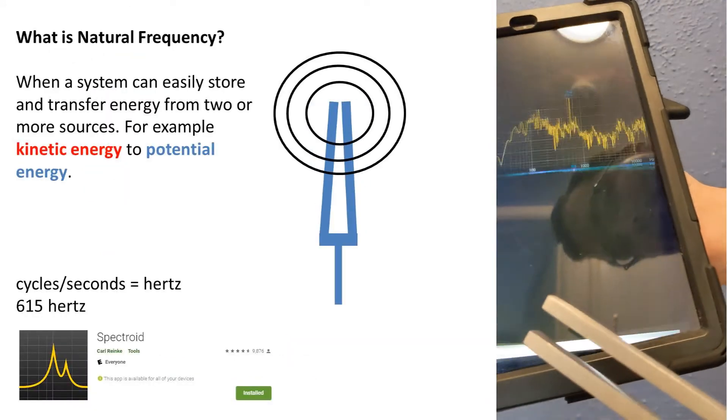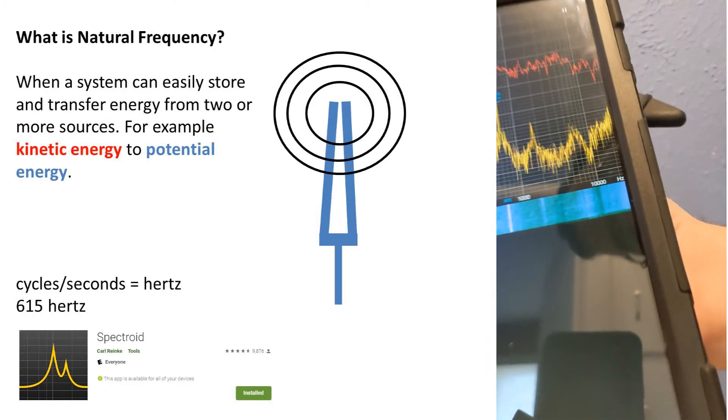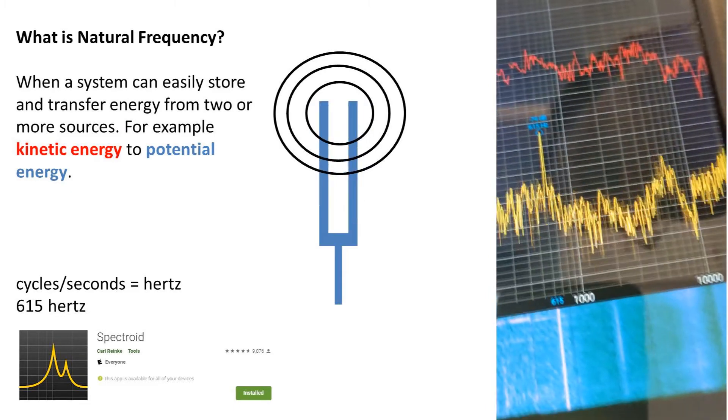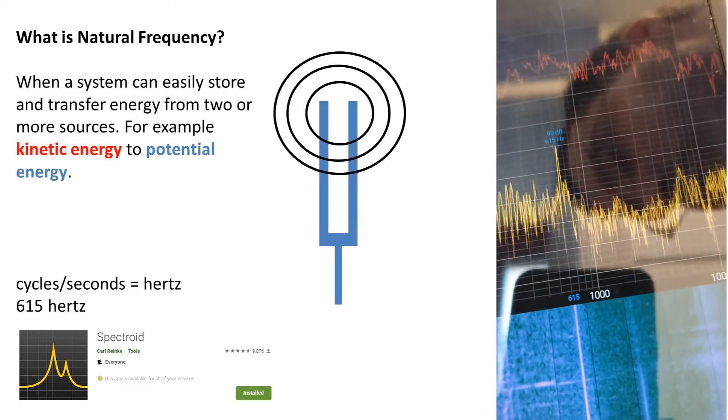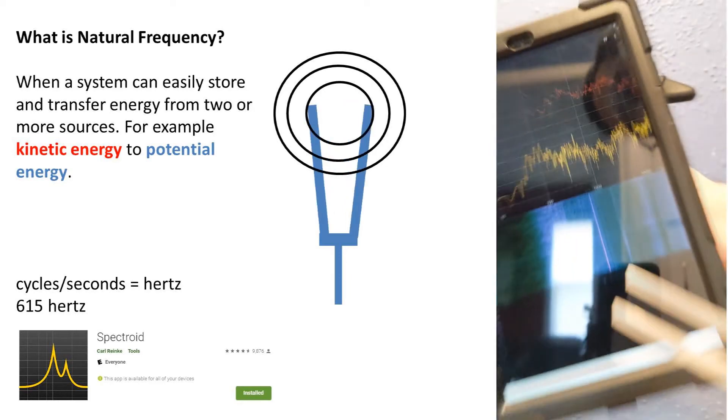I took a measurement using this app and had a frequency of the tuning fork of 615 Hertz. This means the fork is vibrating back and forth at a rate of 615 times in one second.